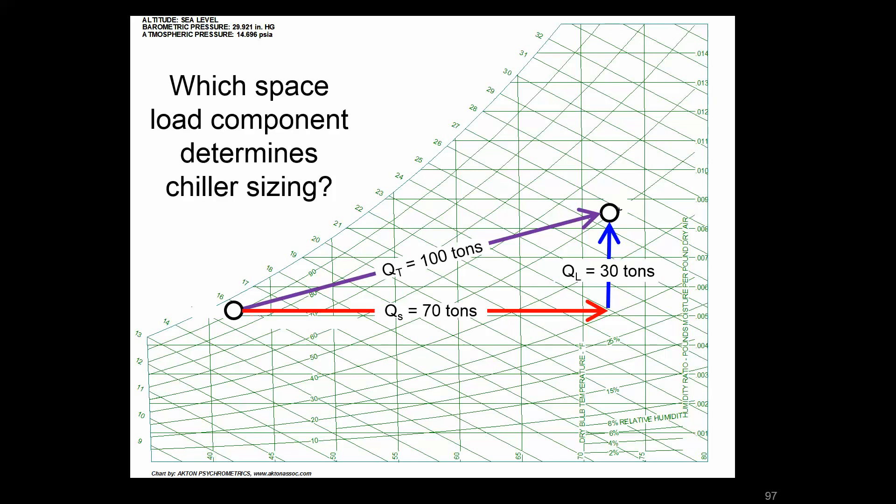Pick one of these numbers. If this is some of the zone processes we've been looking at, if there's a sensible load, say of 70 tons, a latent load of 30 tons, or if you were to consider that as a total, which one of these really sizes the chiller?